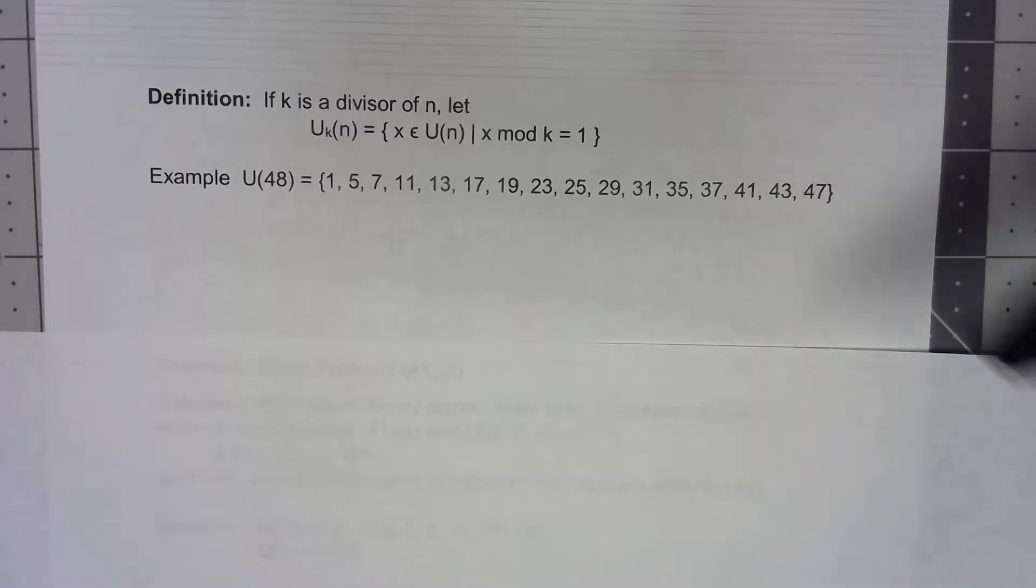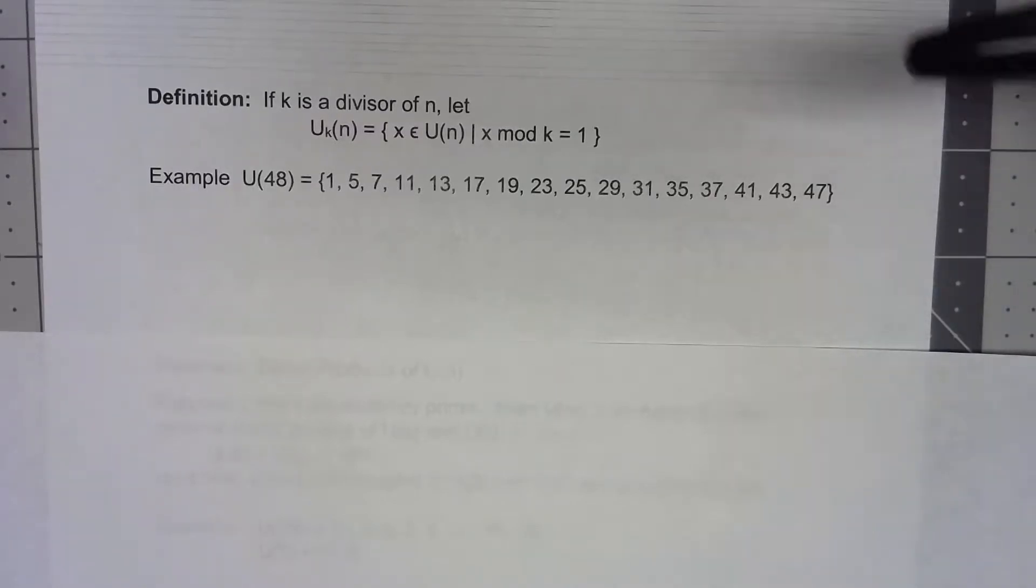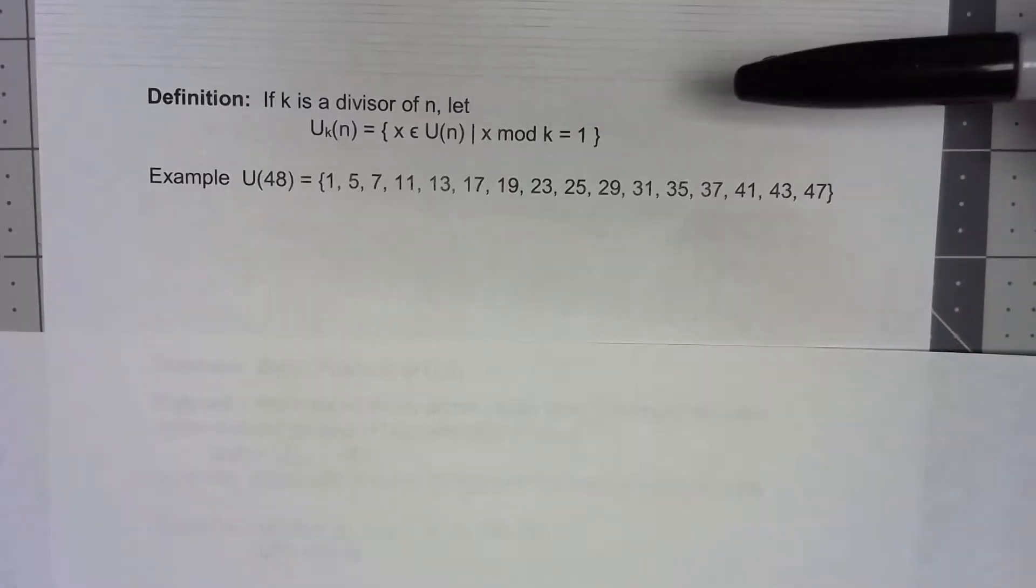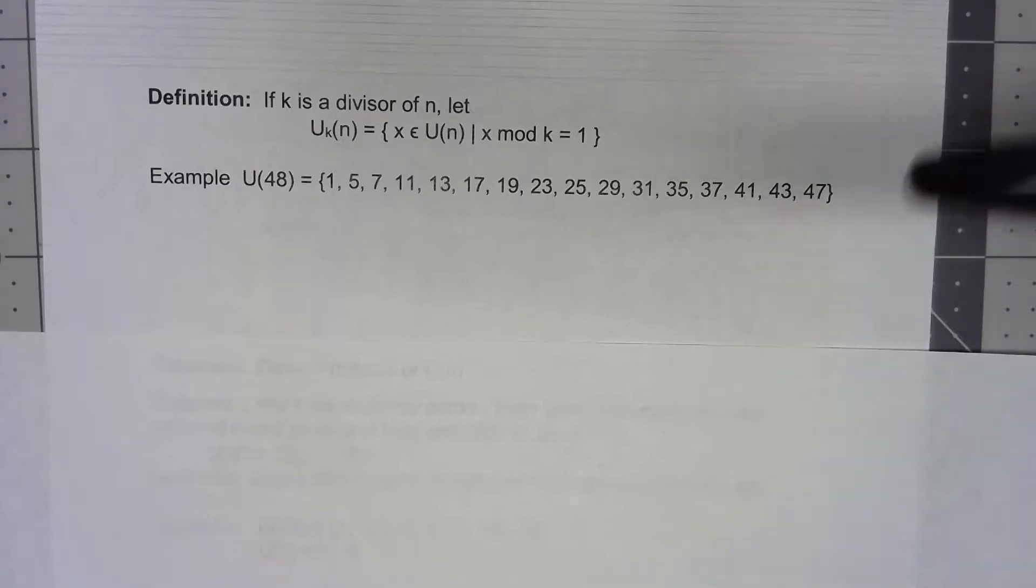The next thing we're going to take a look at is something that's very difficult to understand unless we get down into the dirty details and look at an example. So we're going to say that if we've got a divisor of n, we'll call it k, and we're going to use that U(n) group and then define a set based on that.